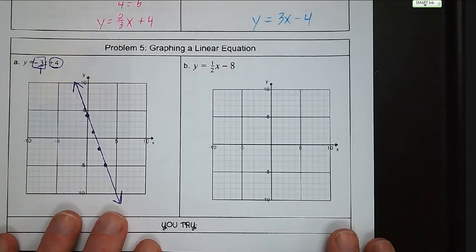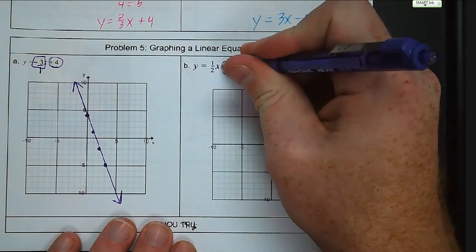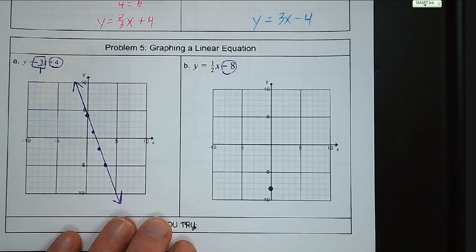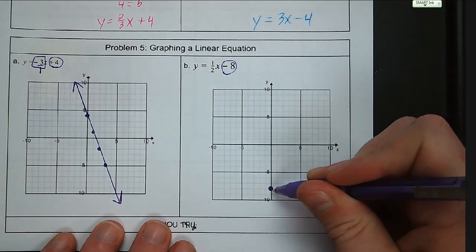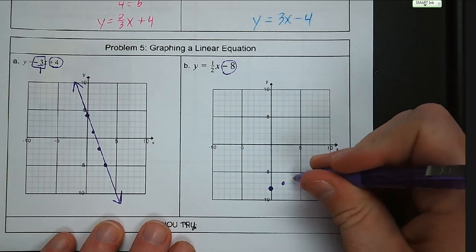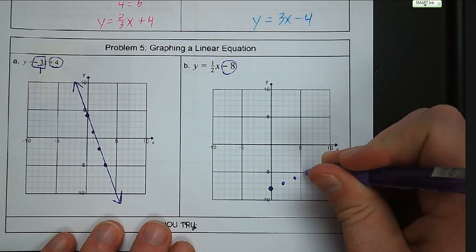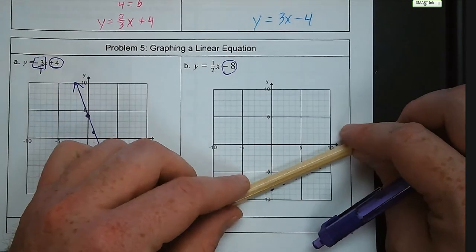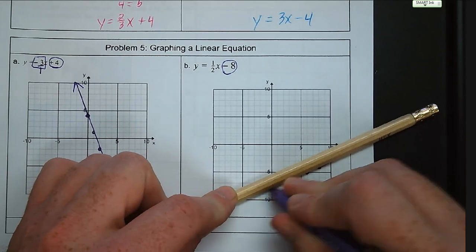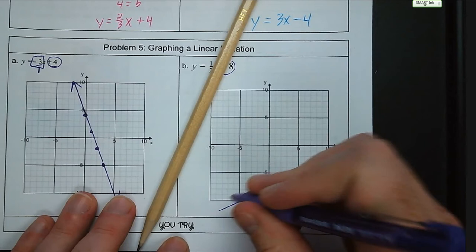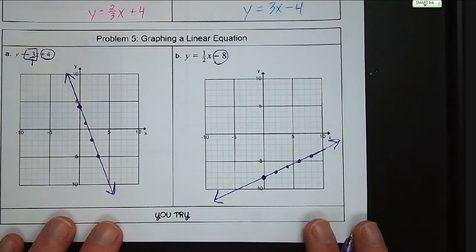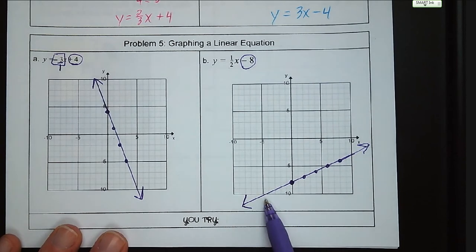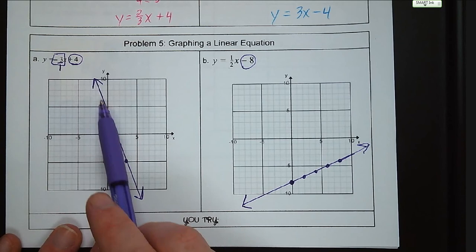For letter B: the y-intercept is at negative 8, so put a point at negative 8. Our slope is positive one-half, so go up 1 and to the right 2, repeating the pattern. Use a straight edge, make sure it covers the edges of the grid, and put arrows on both ends. One slope is positive — going up left to right — and the other is negative — going down left to right.